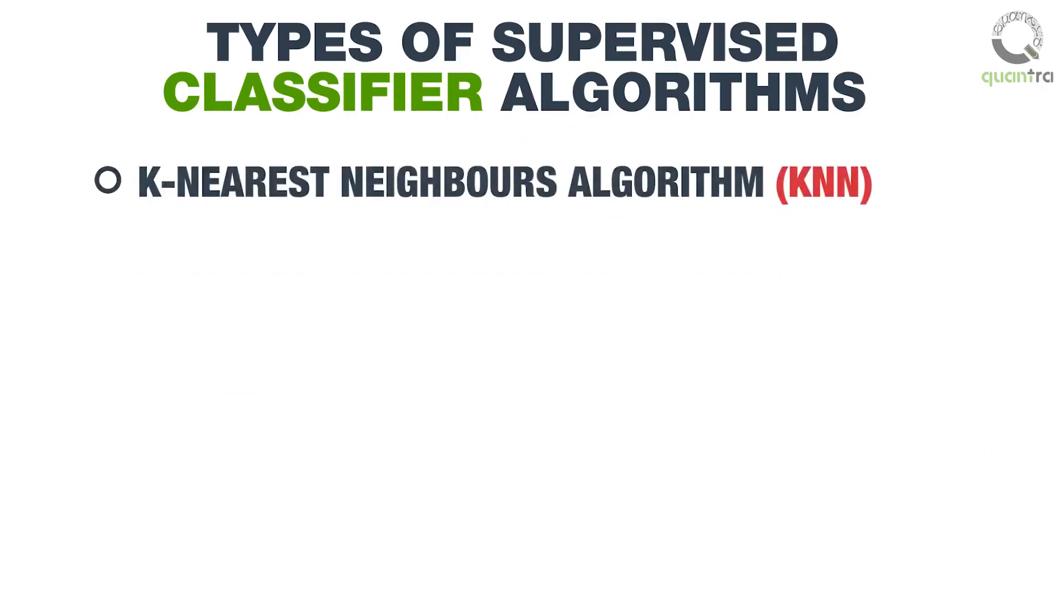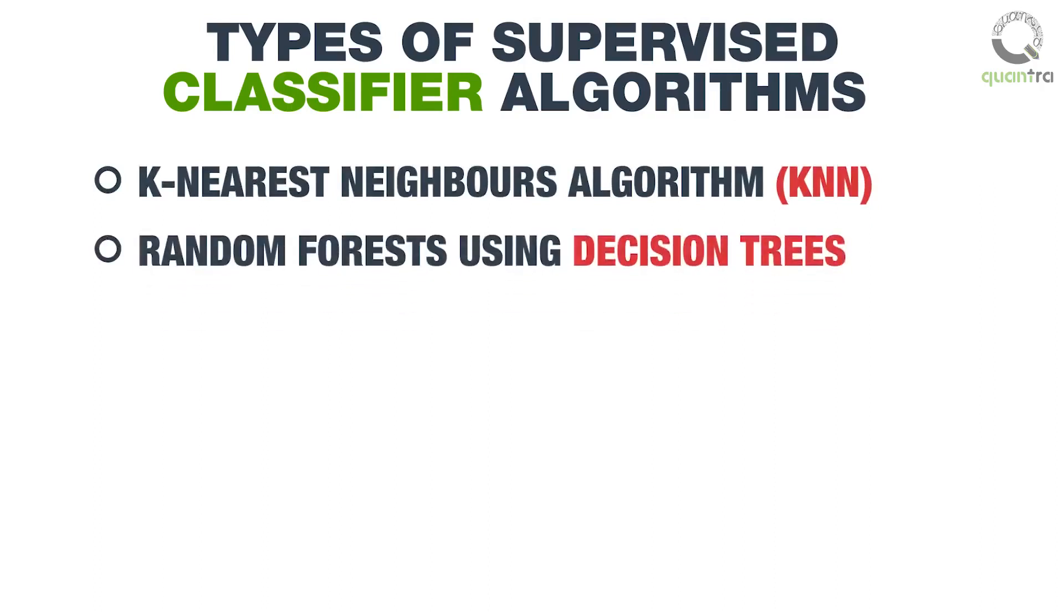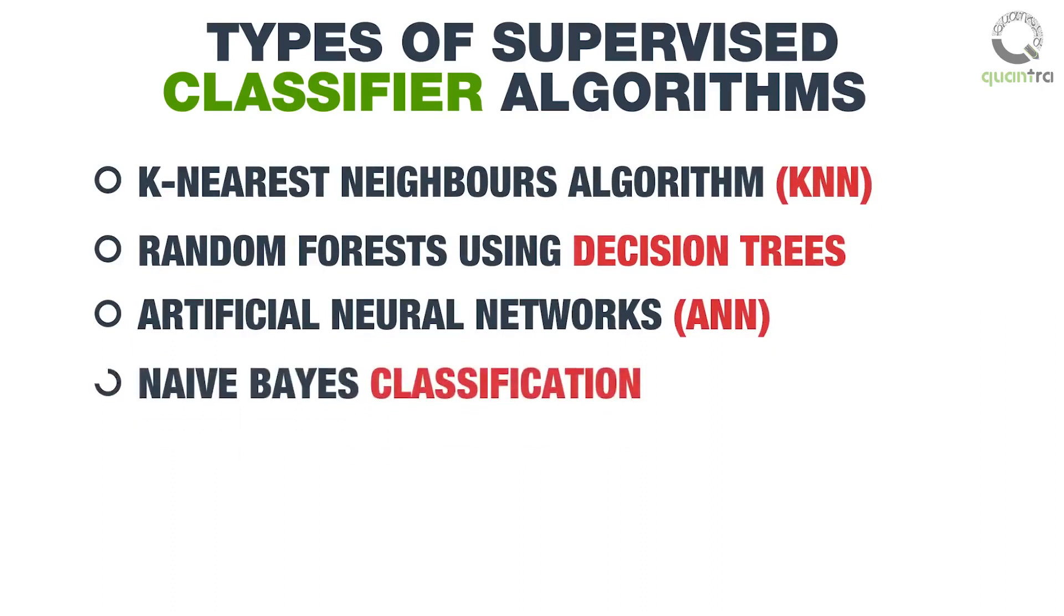K-Nearest Neighbors Algorithm, KNN, Random Forests Using Decision Trees, Artificial Neural Networks, ANN, and Naive Bayes Classification.